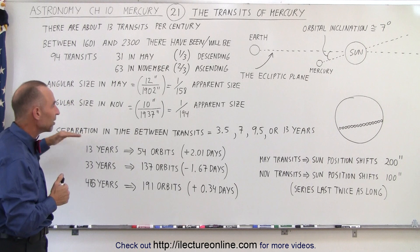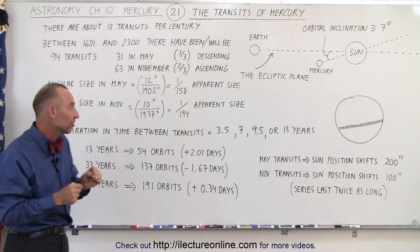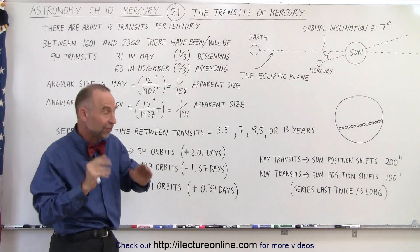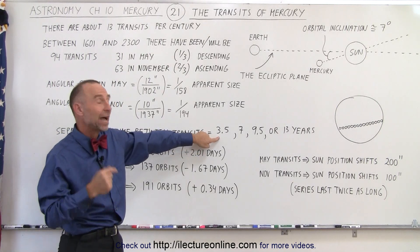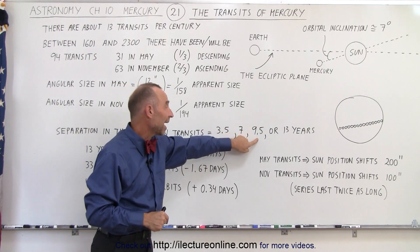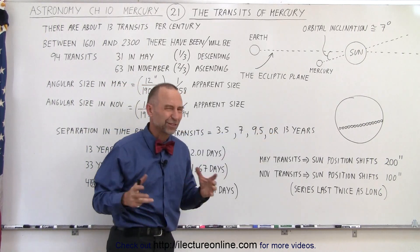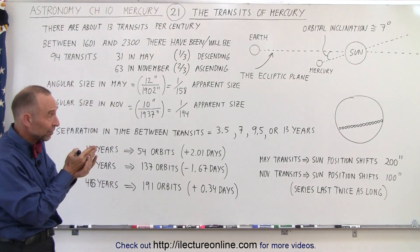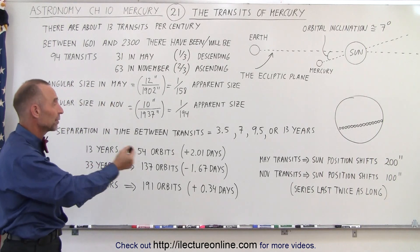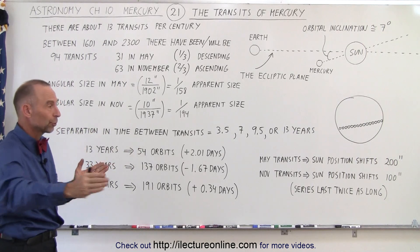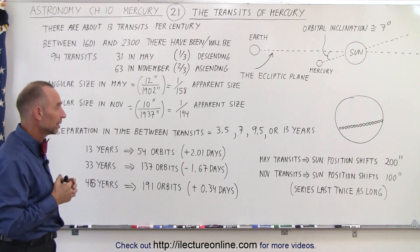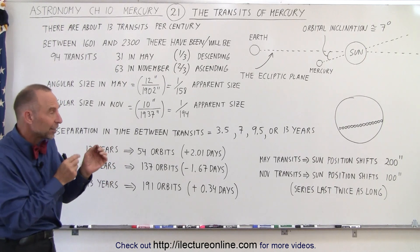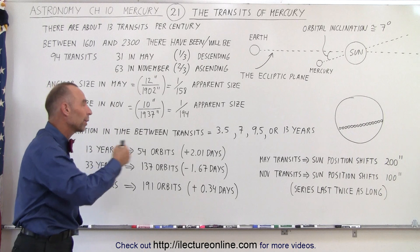The separation between transits occurs at certain time intervals: either three and a half years, seven years, nine and a half years, or 13 years. This has to do with the fact that it takes about 58 and two-thirds days for Mercury to orbit the sun once, while Earth's orbit is one year — 365 and a quarter days. These line up in such a way that there is almost a perfect alignment at those particular regular intervals.